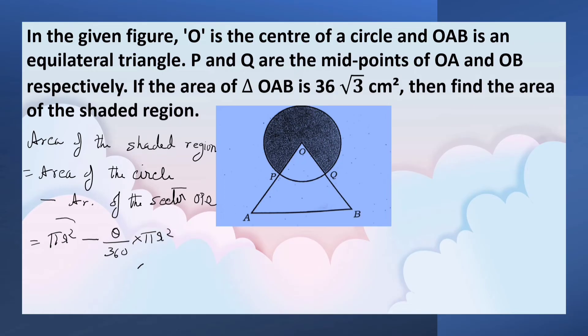Here, pi r square is common. So, we can bring it outside the bracket to make the problem easier. Here, we have taken it outside pi r square. So, 1 minus theta by 360. Now, let us substitute the values.